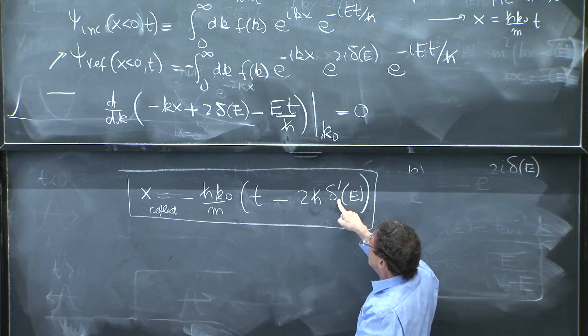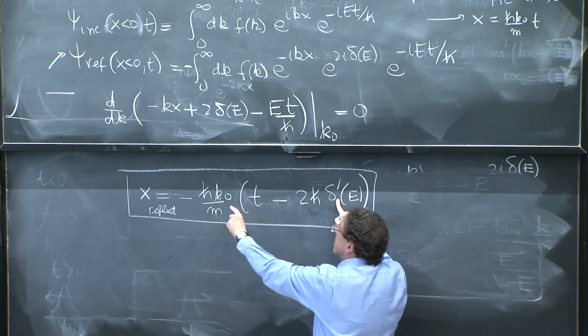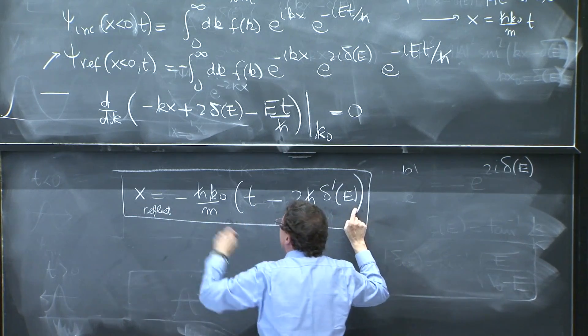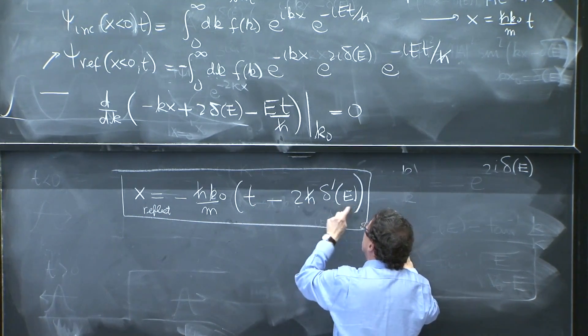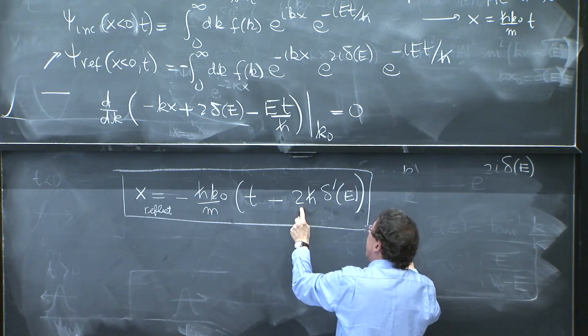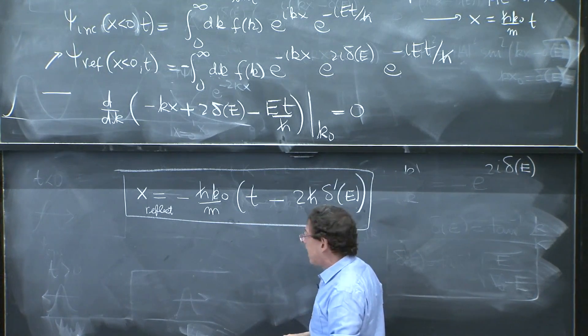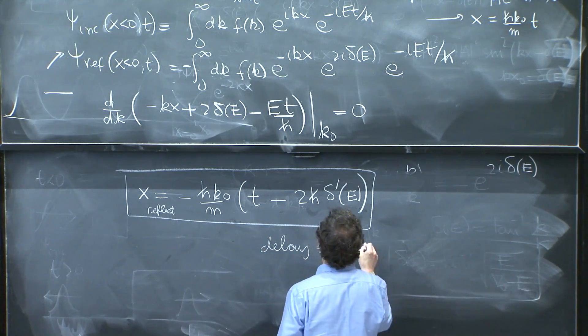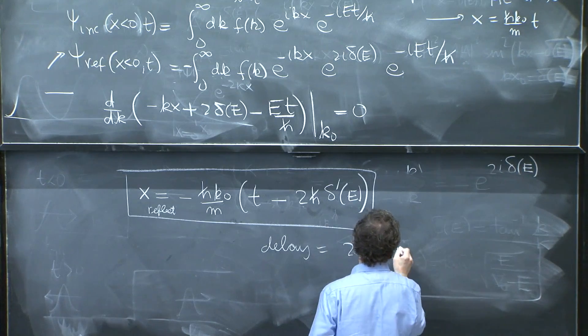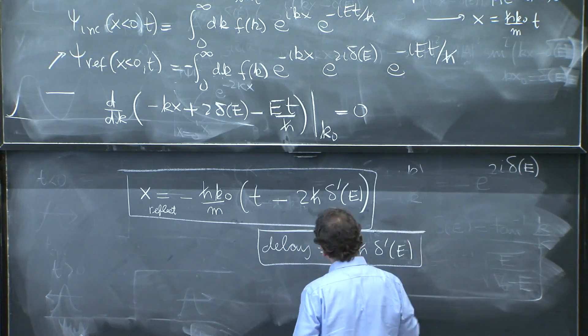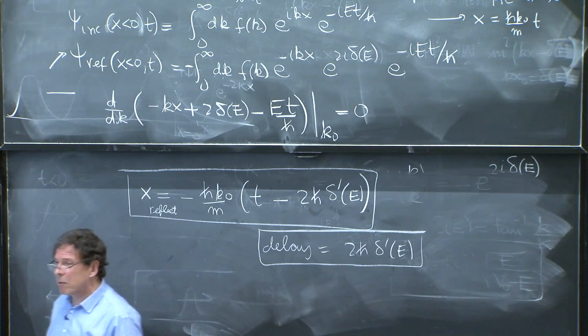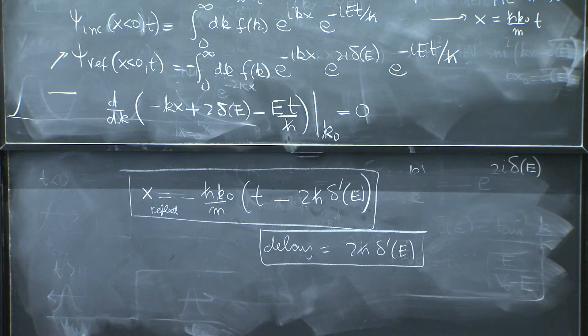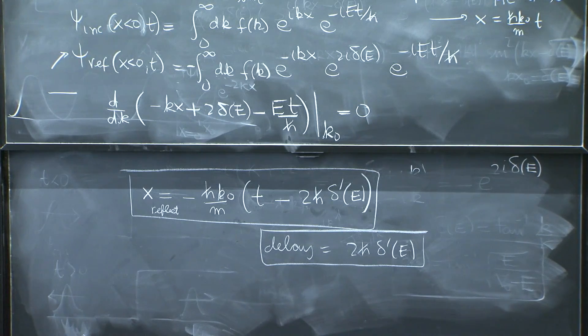But if there is this term, it really doesn't start to move to the left until t is bigger than that, so that x is negative. So only at t equal to this amount of time, the packet reflects. So there's a delay. And the delay is 2h bar delta prime of e. So this is a technology people use in scattering theory to figure out what kind of potential you have, figure out how much things get delayed from the bouncing.